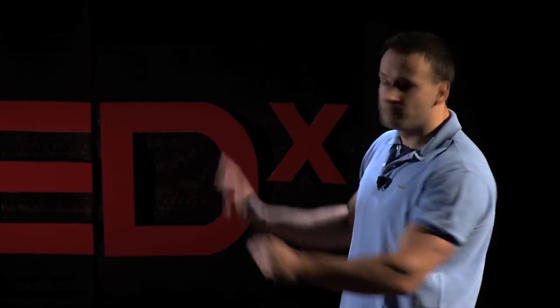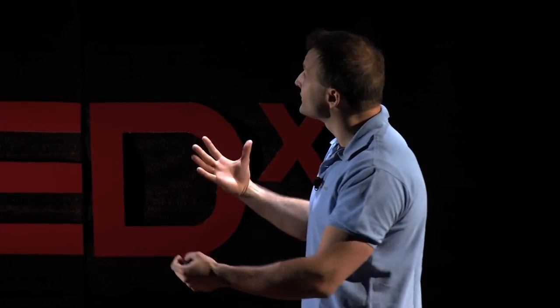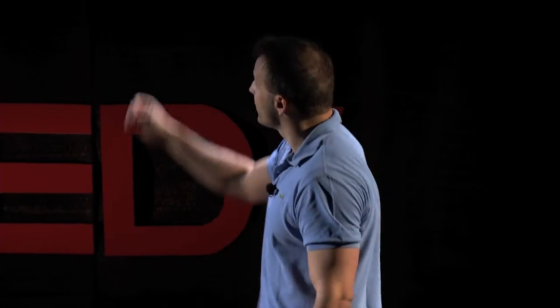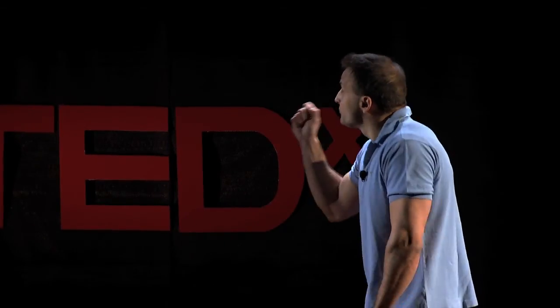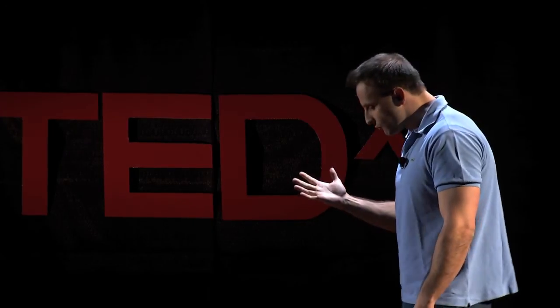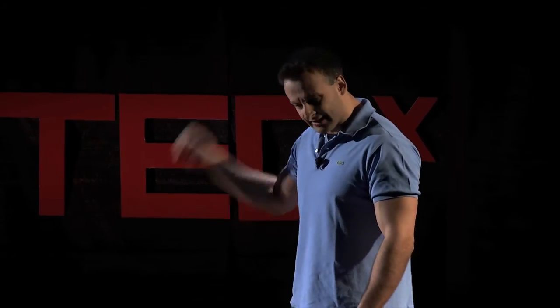But this map is far from perfect. It actually distorts the size of certain objects. Look at the map — the size of Africa in comparison to Europe and North America is way too small. Any map of the Earth can't be perfect. Interestingly, this problem of making a perfect plain map of a weirdly shaped object was what got Gauss started on his research in the first place — the King of Hanover wanted a perfect map of his territory.